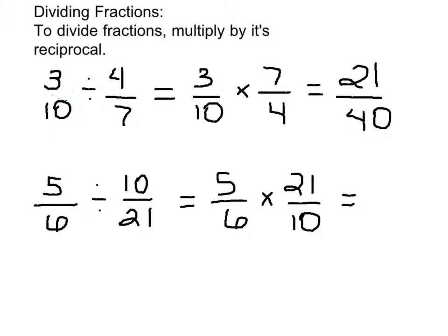We can make our multiplication a little bit easier by cross-cancelling prior to multiplying the numerators and the denominators. So 5 goes into itself once, goes into 10 twice, and 3 goes into 21 seven times, and it goes into 6 twice.